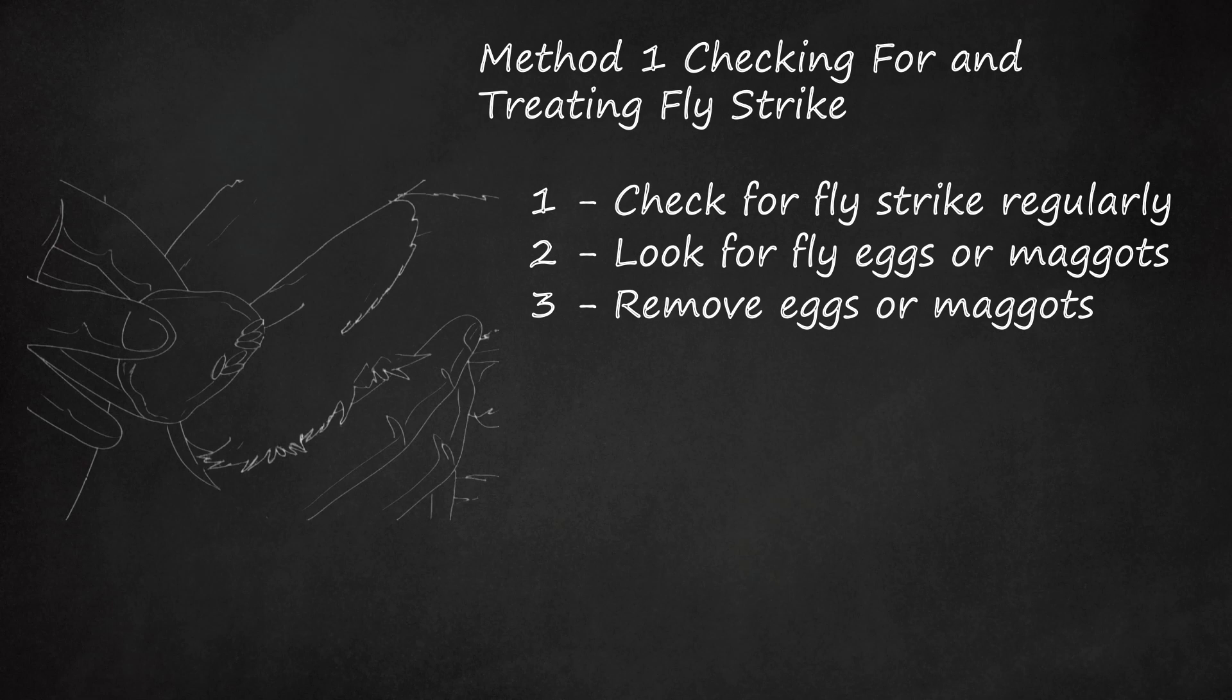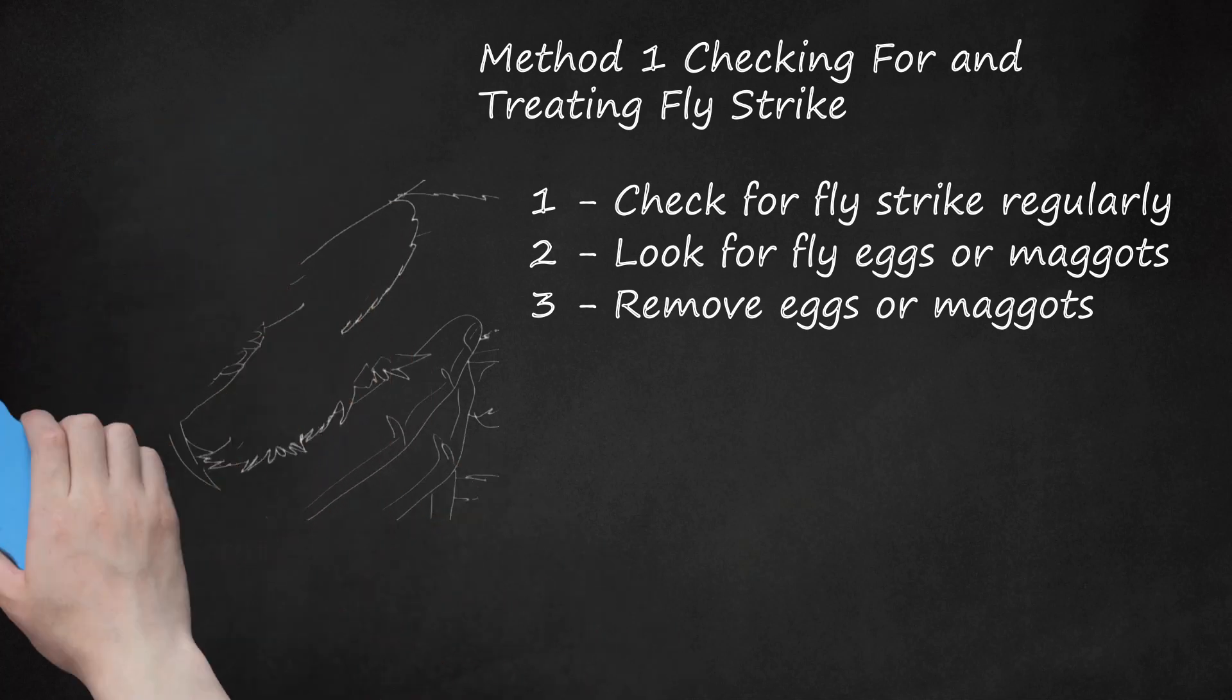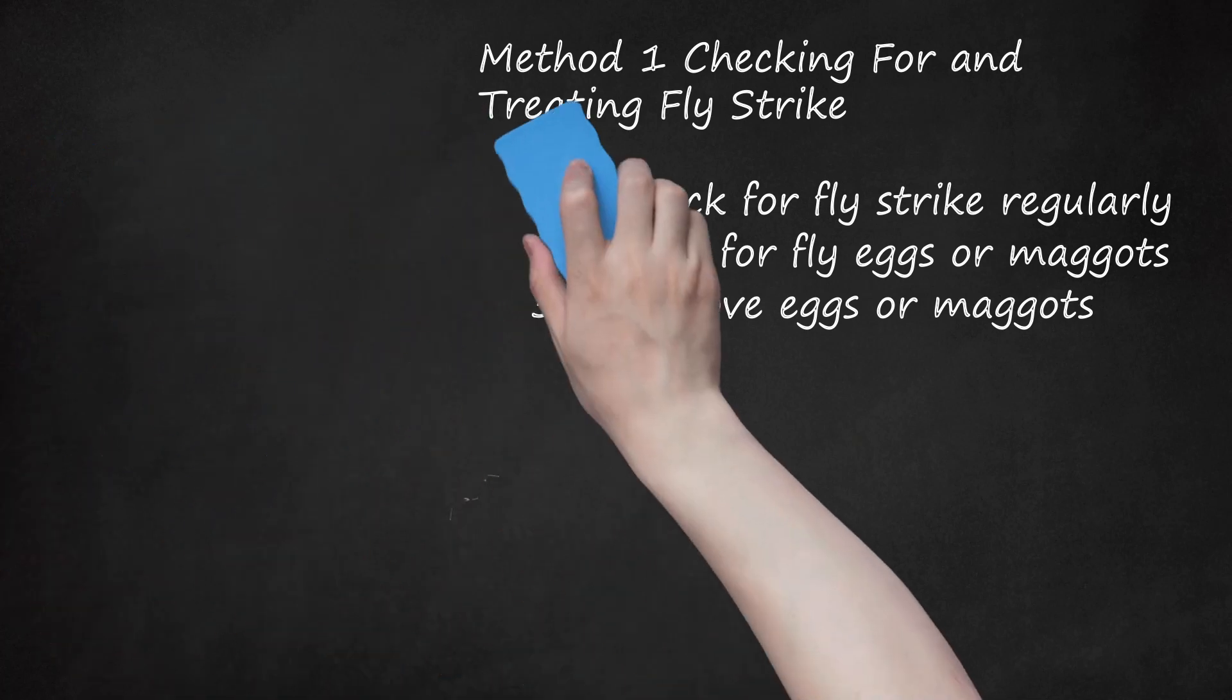Eggs take a matter of hours to hatch out, so it is possible for a rabbit that was clear at breakfast time to have fly strike by the evening. This is why it is important to check twice a day.